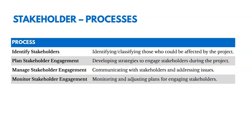Then we're going to manage stakeholder engagement — communicate with stakeholders, address their issues, and monitor those relationships. And to control stakeholder engagement, we're going to monitor and adjust plans for engaging stakeholders over time. If things aren't working, we want to figure out a different way to engage with them to make sure they're appropriately involved and communicated with.